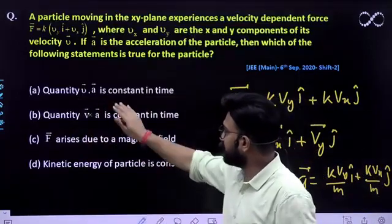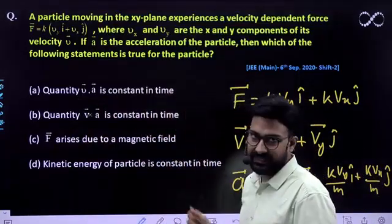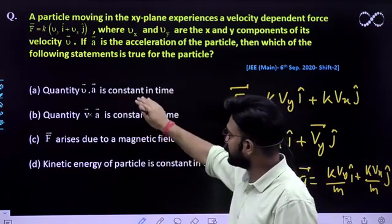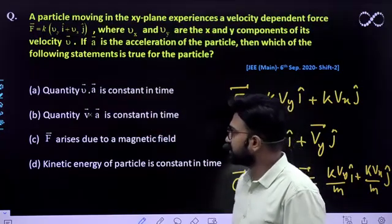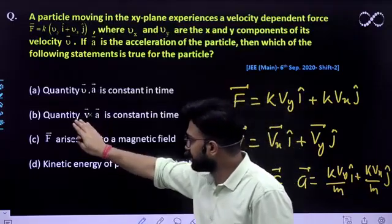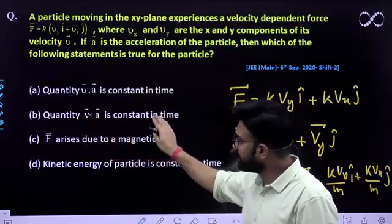Look, quantity v dot a is constant in time. And v dot a is constant in time. This is one option already given to you. And one more thing, quantity v cross a is constant in time. This is also one option given to you.